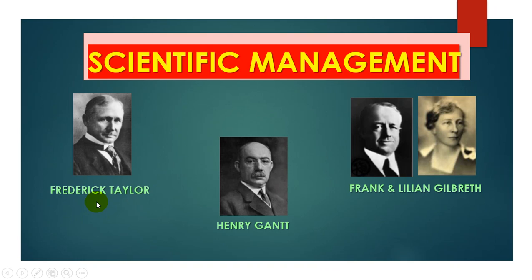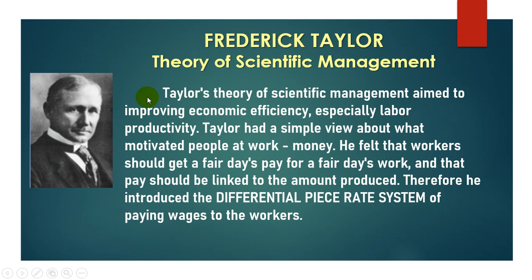Under scientific management, the key theorists are Frederick Taylor, Henry Gantt, and Frank and Lillian Gilbreth. Taylor's theory of scientific management aimed at improving economic efficiency, especially labor productivity. He felt that workers should get a fair day's pay for a fair day's work, and that pay should be linked to the amount produced. He therefore introduced the differential piece rate system of paying wages.